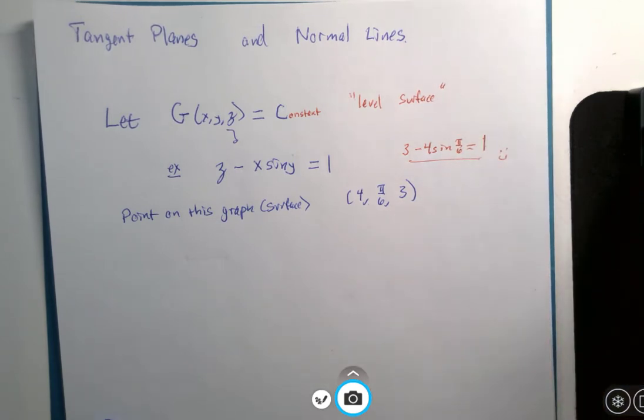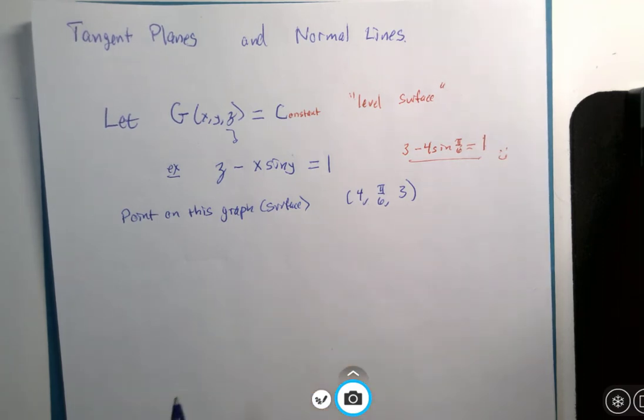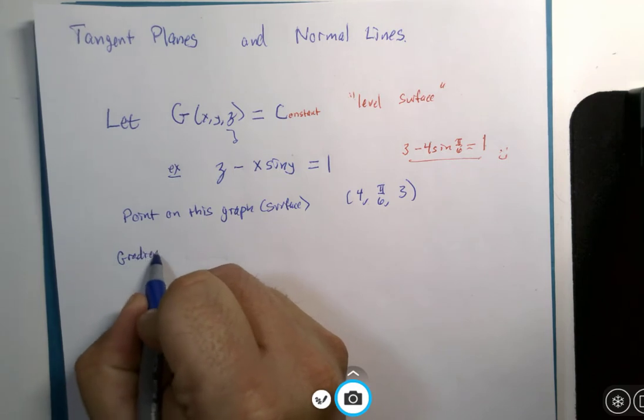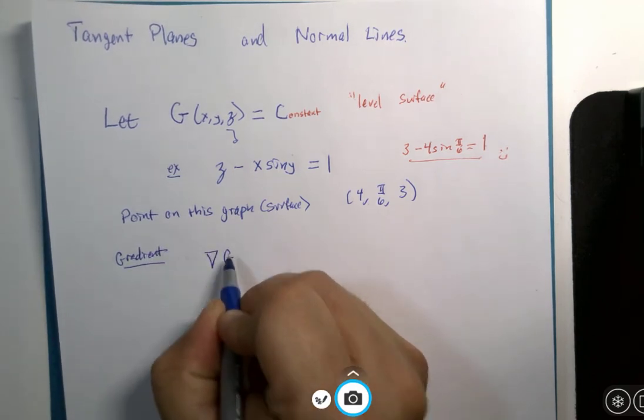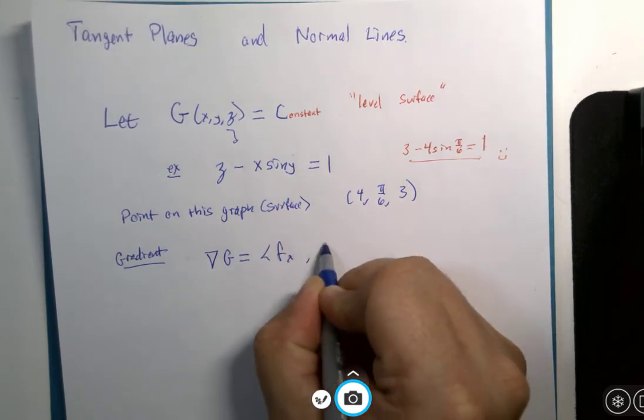But we recently learned that if we use the gradient, the gradient of G, which would be a vector built up of the partial derivatives,